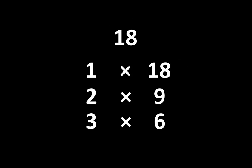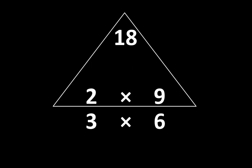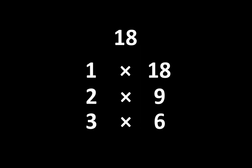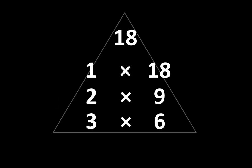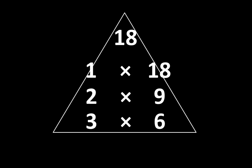Some people see these as separate ideas — they see this as one idea, this as a different idea, and this as still another separate idea. But others notice how they are all connected to the product. In this case, how they are all connected to eighteen. Even though the pairs are different, they are all tied to the same product: eighteen.